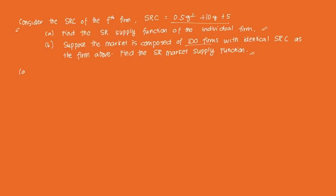We'll solve first for the individual short-run supply function. To derive the individual supply curve of a firm, we have three conditions. The first is the first-order condition, which states that price is equal to short-run marginal cost. So we can get short-run marginal cost: SMC = dSRC/dQ. Deriving 0.5Q² + 10Q + 5 with respect to Q gives us Q + 10.